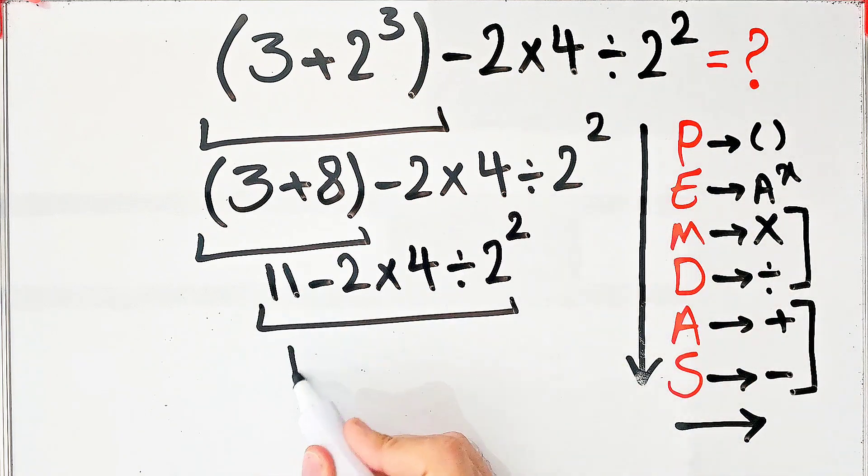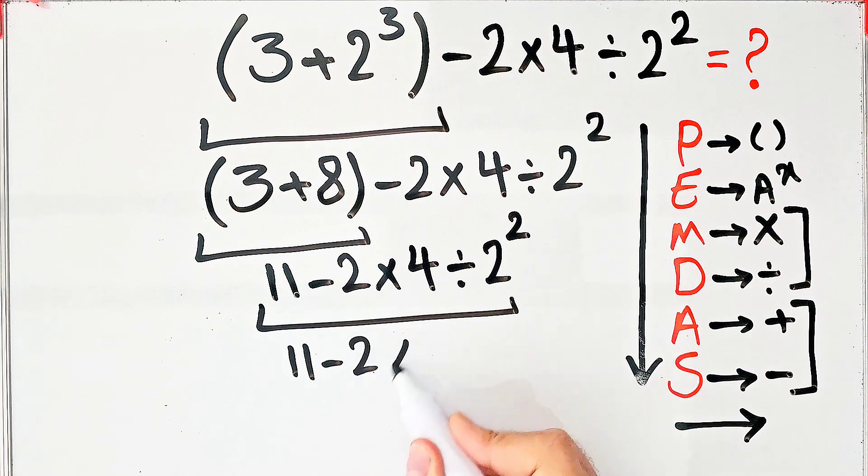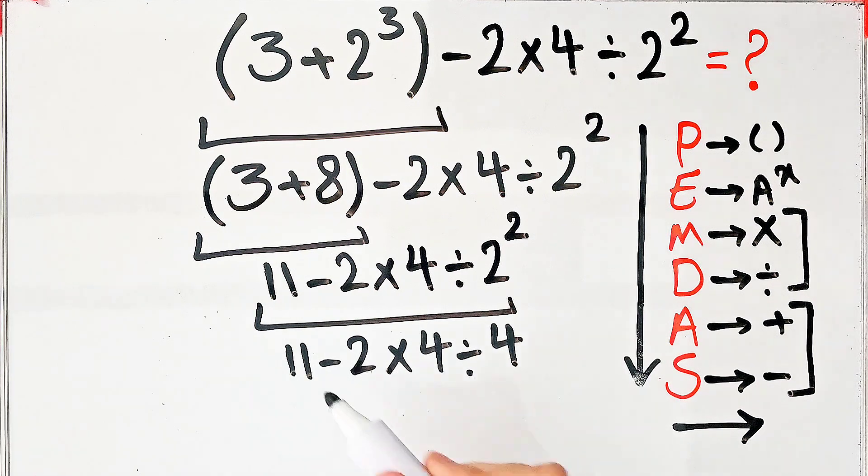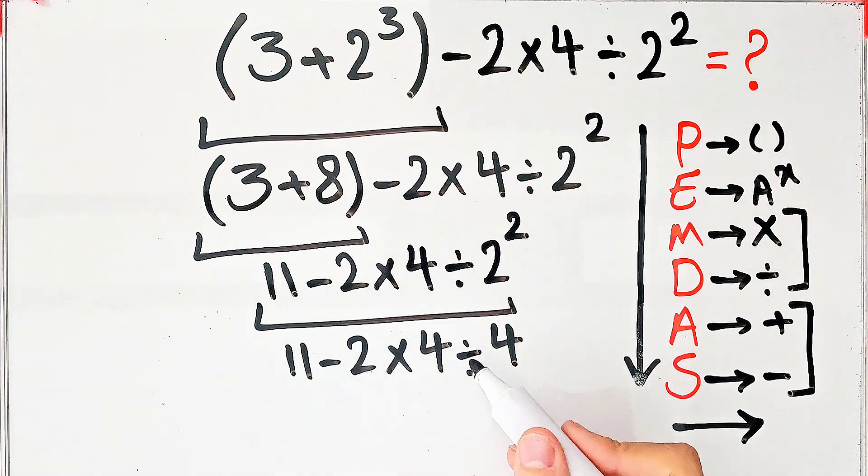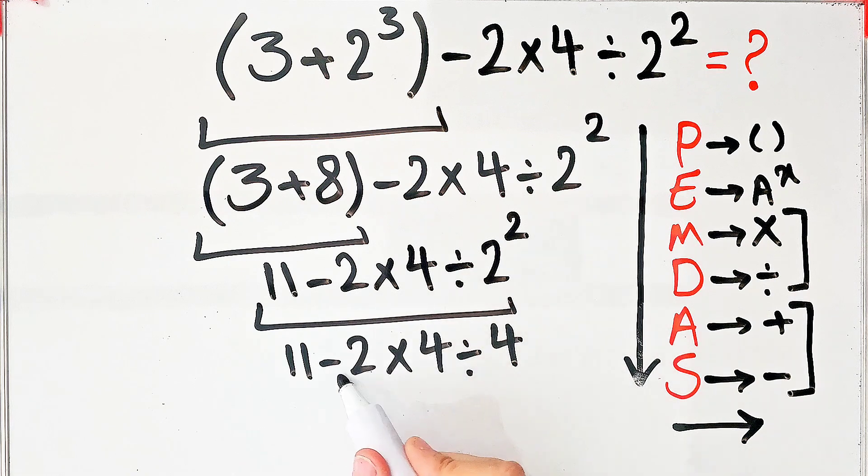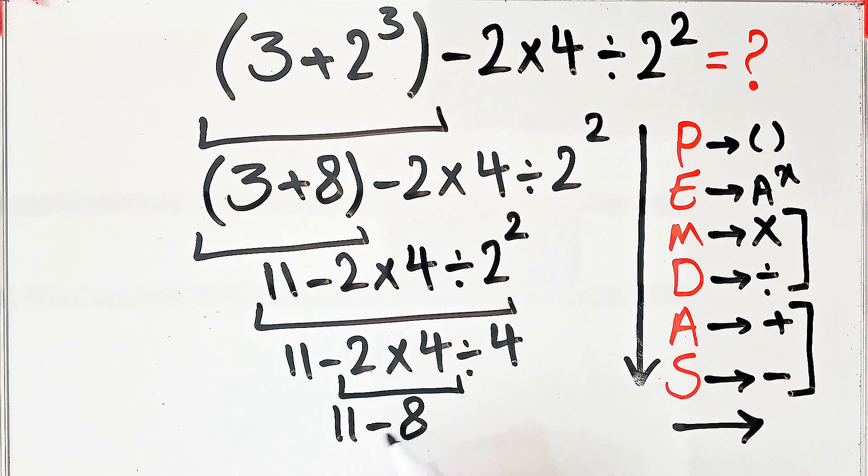Now we have subtraction, multiplication, and division. First we have negative 2 times 4, which equals negative 8. The question is 11 minus 8 then divided by 4. Now we have subtraction and division.